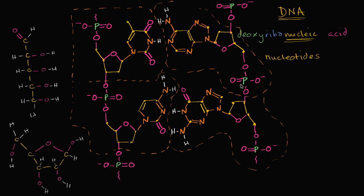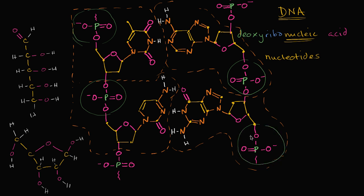Now let's think about the different pieces of that nucleotide. One thing that might jump out at you is we have these phosphate groups. This is a phosphate group right over here, and this is a phosphate group right over here. Each of these nucleotides have a phosphate group.